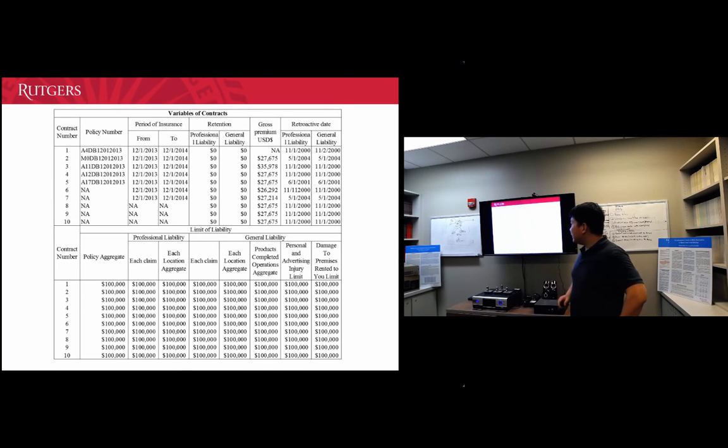The example shows the results, the variables of contracts extracted from the similar contracts. As you can see here, we use regular expressions to match the pattern of the variables. If the auditors specify that the policy number and the gross premium amount will be important, we write regular expressions to match that pattern and use that to extract the information.